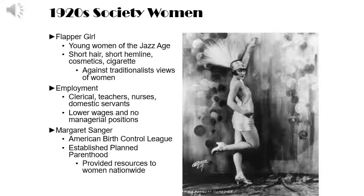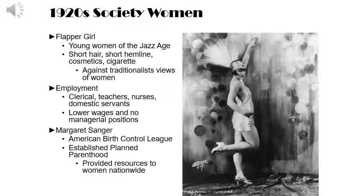There were also major progressive changes of the 1920s. The flapper girl — a young woman of the Jazz Age — was characterized by short hair, short hemlines, cosmetics, and cigarettes, in direct contrast to the traditionalist view of women. Women began being employed as clerical workers, teachers, nurses, and domestic servants, often paid lower wages than men and rarely in management, but it was among the first times in history that women worked outside the home. Margaret Sanger established the American Birth Control League and Planned Parenthood, which provided resources to women nationwide and still exists today.